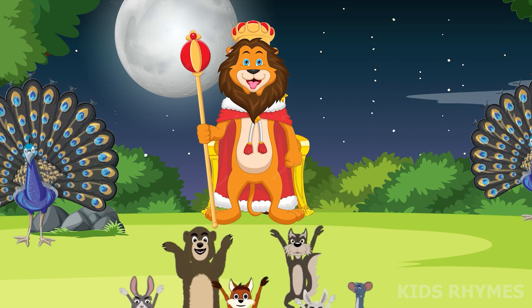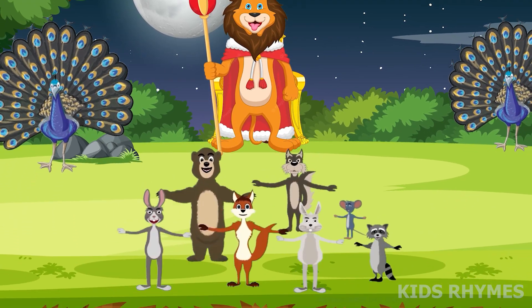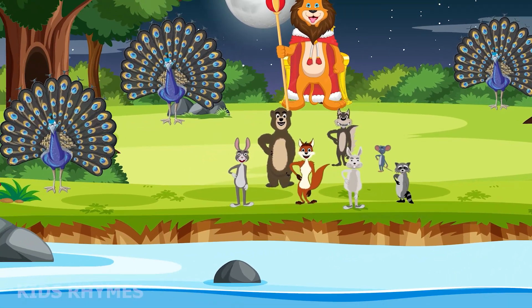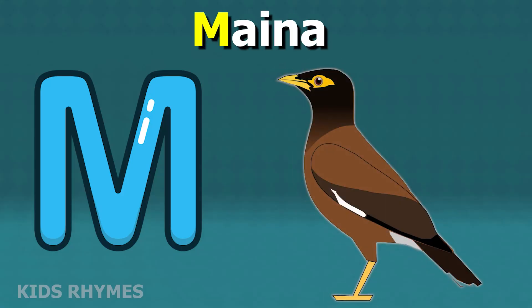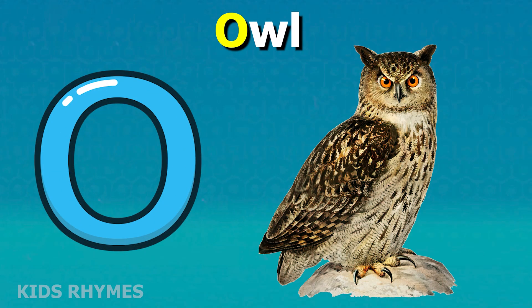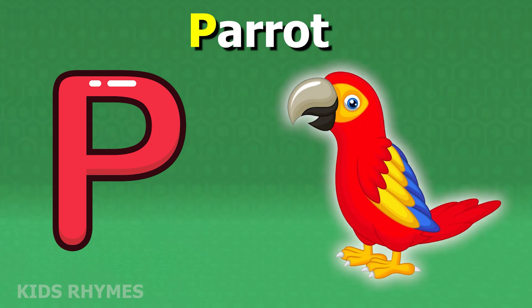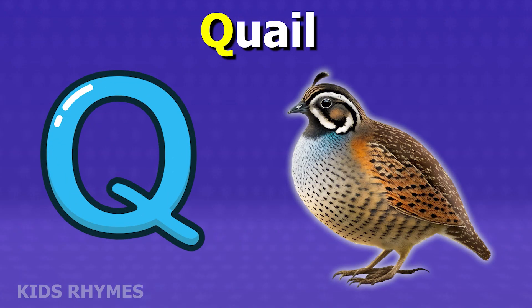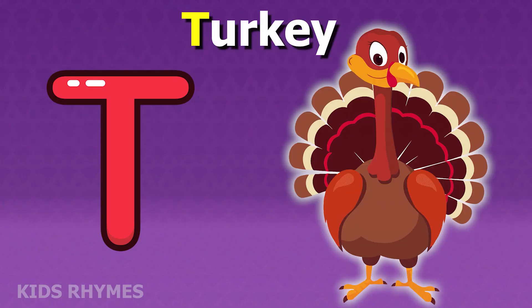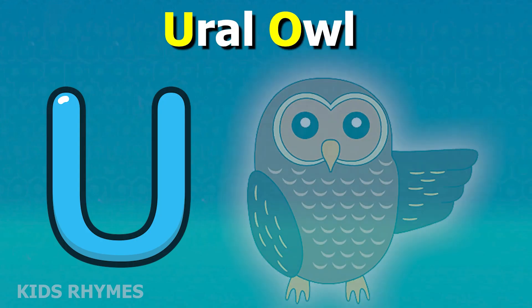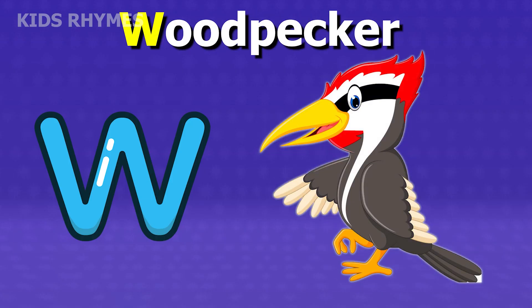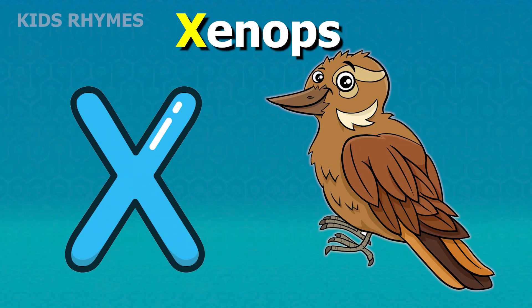M for magpie, N for nightingale, O for owl, P for parrot, Q for quail, R for robin, S for sparrow, T for turkey, U for umbrella bird, V for vulture, W for woodpecker.